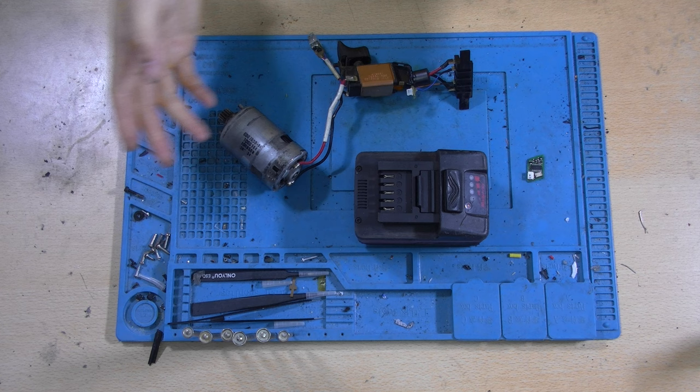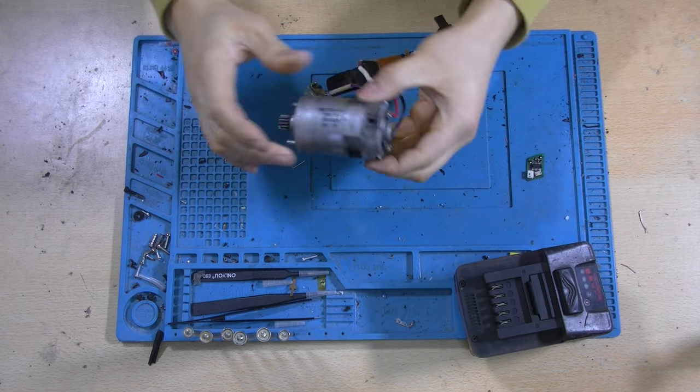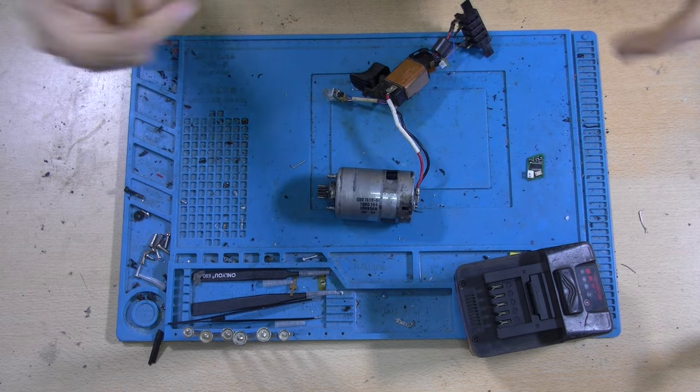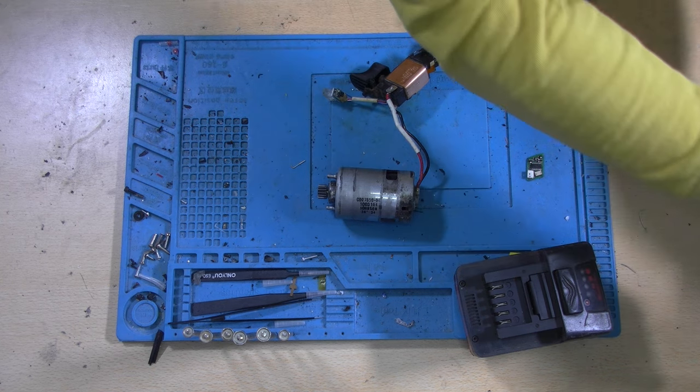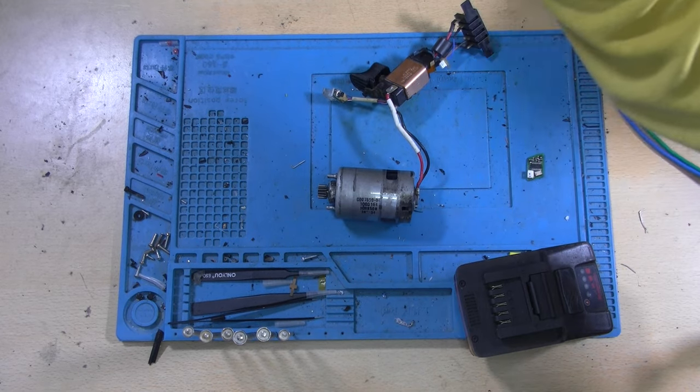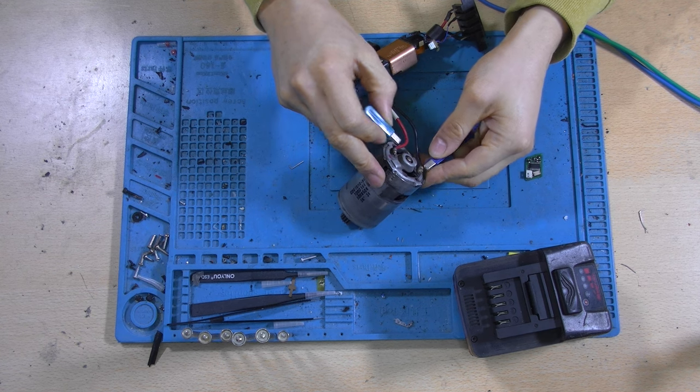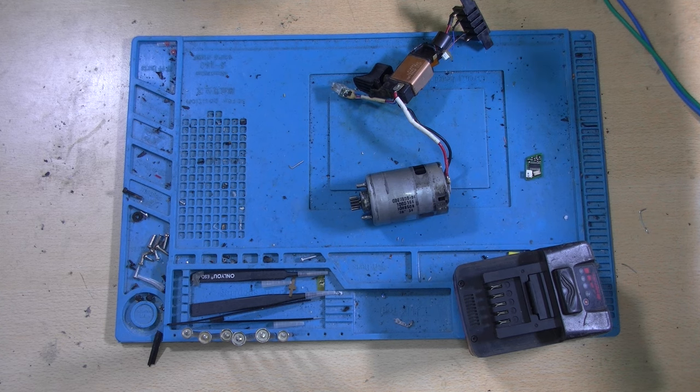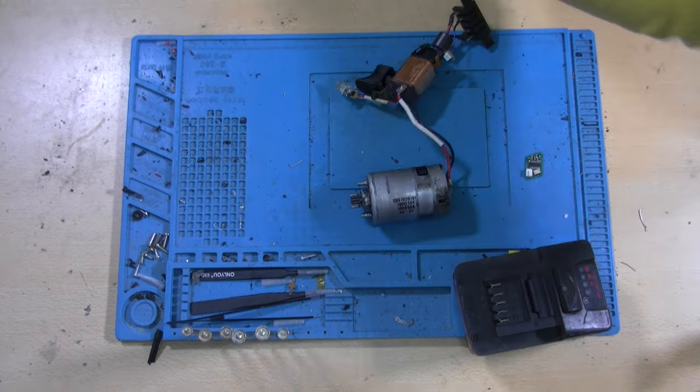So we might be able to fix it, but first let's test if this motor still spins whilst applying voltage to it. Cause if that doesn't work, it's completely useless to proceed with any repair. So I'll just apply 12V to it since it's an 18V DC motor. It doesn't really do anything actually. Oh, it's current limiting.